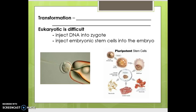With this technology, we're looking at how we can manipulate genetics and change things. Do we inject it into a zygote? Do we inject embryonic stem cells into the embryo? All the different possibilities in front of us right now are just amazing. We also talked about gel electrophoresis — a very important technique used to separate and sort DNA based on size and charge.